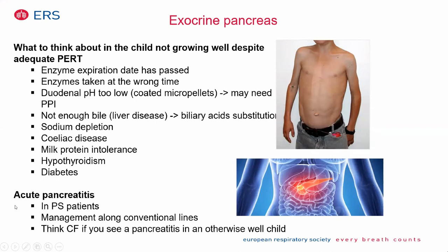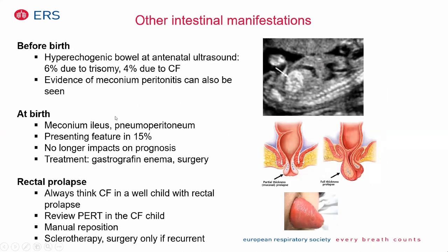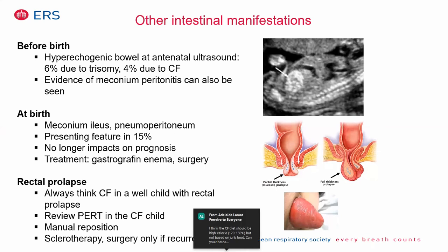Acute pancreatitis occurs almost exclusively in pancreatic-sufficient CF patients, but when an otherwise healthy child presents with pancreatitis, CF must be considered. Before birth, hyperechogenic bowel is often found on ultrasound but has limited clinical significance. Meconium ileus — which had a very poor prognosis 20 years ago — no longer changes the long-term outcome. Rectal prolapse is sometimes seen when pancreatic enzyme replacement therapy is not correctly taken.